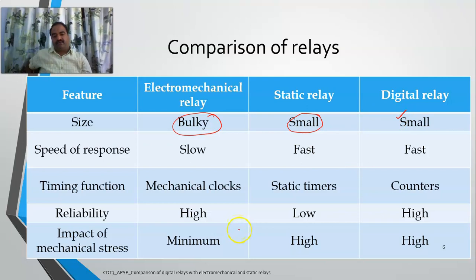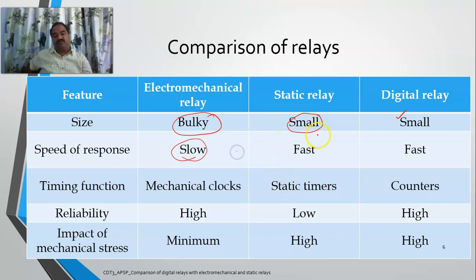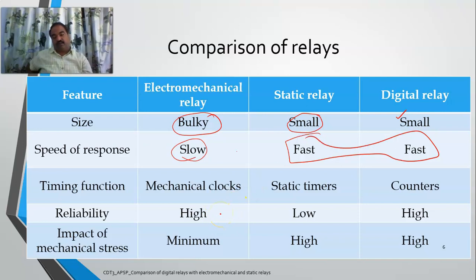Coming to speed of response: electromechanical relays have a slow speed of response since they have moving devices and are very bulky. One of the biggest advantages offered by the next generation relays is that they are very fast — their operating time is very low. Within microseconds or milliseconds they will sense an abnormality and indicate. That is the biggest advantage offered by digital relays. Static relays are also very fast.